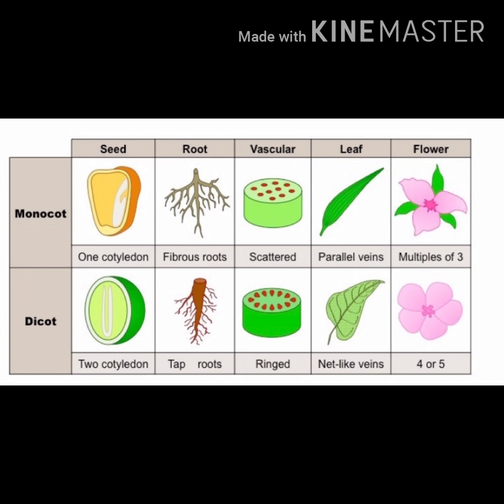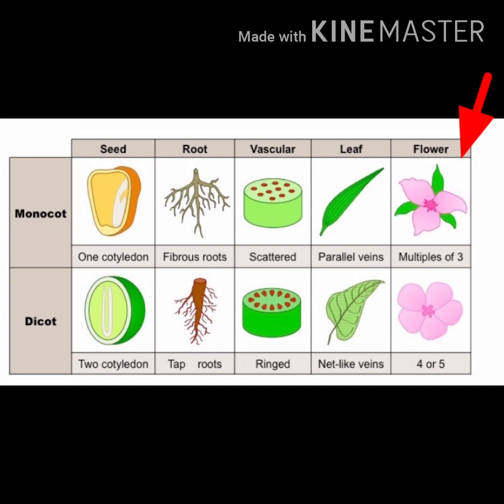For flowers: the petals of dicotyledonous plants will be 4 or 5 or in their multiples — so 4, 8, 16, 20, or 5, 10, 15, 20. The petal count is 4 or 5 or multiples of 4 and 5. When the count is based on 4, it is called tetrameris, and when based on 5, it is called pentameris. You can observe this in the diagram.